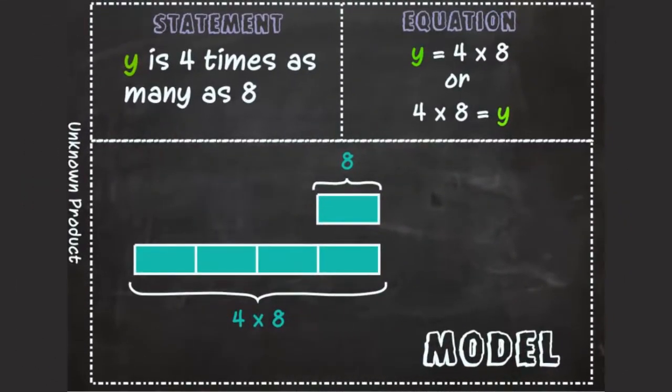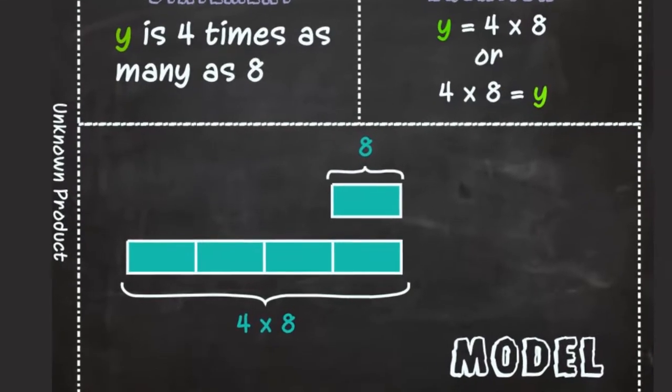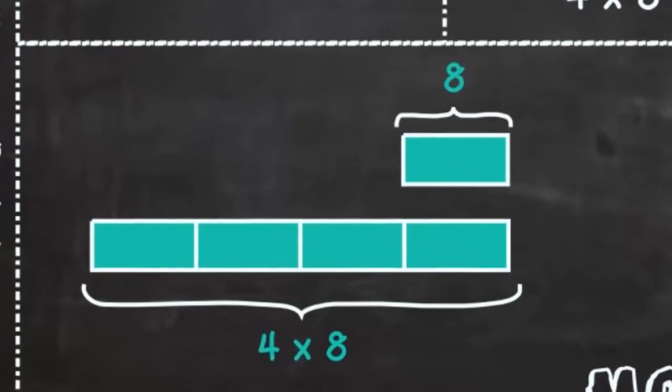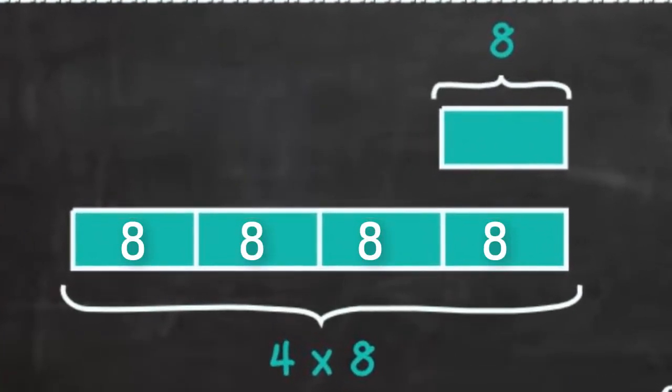To find 4 times as many as 8, you would have to use a model to show 4 groups of 8 compared to 8 itself.